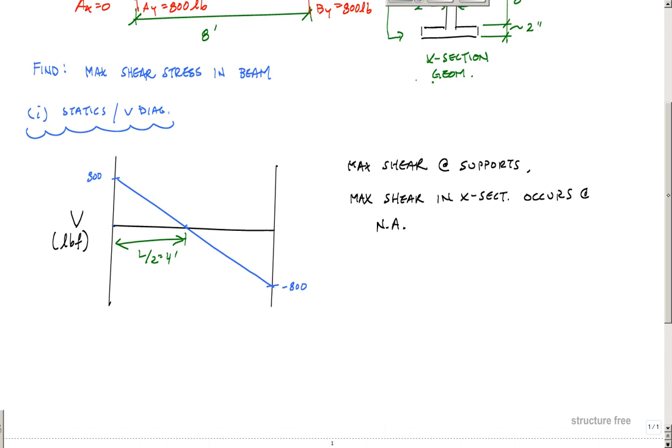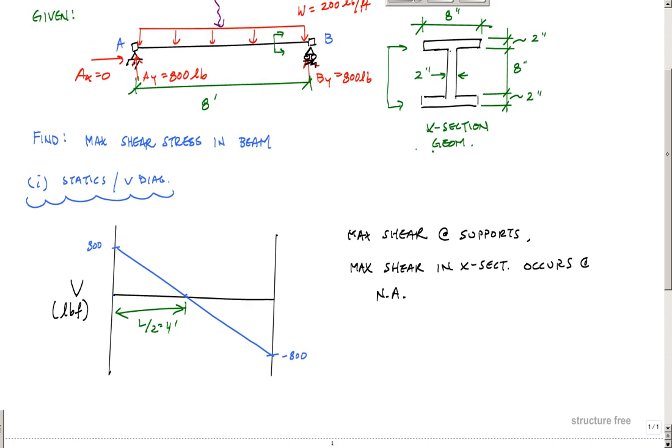I expect my max shear stress to occur right where this two-inch line is right here. This being two inches, my neutral axis—because this is a symmetric shape—is right here. This is my neutral axis, and my max shear stress will occur there at that location.